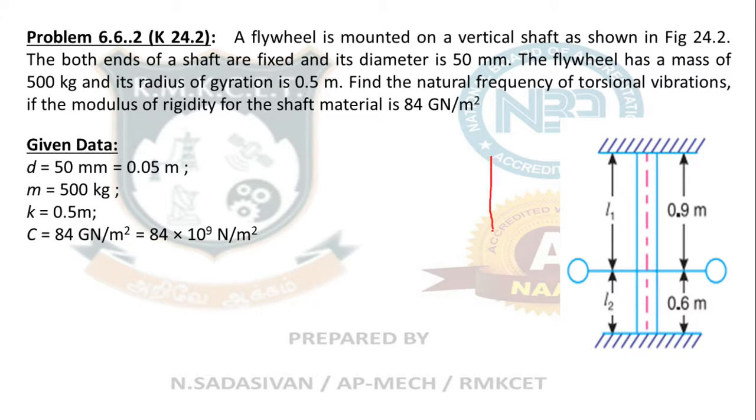One cantilever up to this with a disc, and another cantilever up to this with a disc, with the same mass and radius of gyration. It is split into two problems. You calculate this torsional stiffness and this torsional stiffness, add them together and then calculate the frequency. That will be the correct way of doing the problem.